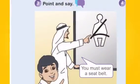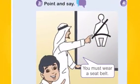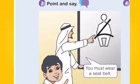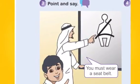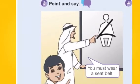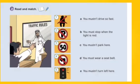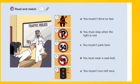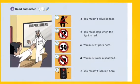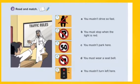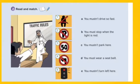Point and say: You must wear a seatbelt. Read and match — we have pictures on one side, from one to five, and sentences from A to E on the other side. We're going to match the correct sentence with its correct picture.